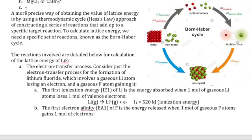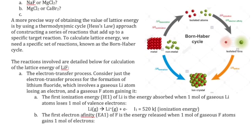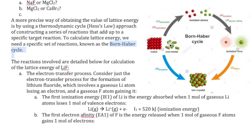There's a much more precise way to calculate the strength of an ionic bond. We use a thermodynamic cycle — the Hess's law approach — combining a specific set of reactions so that when we add them together, we can calculate our lattice energy. This particular thermodynamic cycle is called the Born-Haber cycle. You start with your elements in their original natural form: metals tend to be solids and non-metals tend to be gases, and we need to separate them into their atoms.